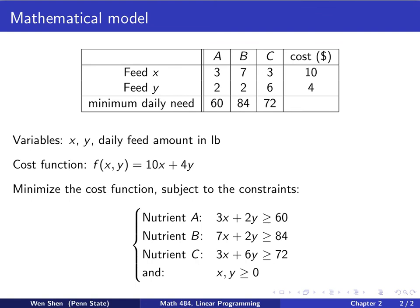And the next step is to find all the constraints. So I want to minimize this cost function here, but I have to obey all these constraints of the nutrition value, the minimum value. So it's very similar. So if I use X and Y amount here, the nutrition value for item A will be 3X plus 2Y, and this shall be bigger than 60.